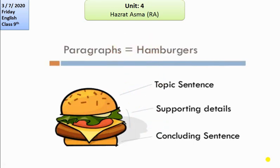Now look at this slide — this picture of a hamburger — it's going to make your concepts more clear. The upper part represents your topic sentence, where you begin with a strong sentence and tell about your main idea. All the things inside — the green, red, brown layers — are your supporting details, where you include examples, evidence, and argument. The lower part is your concluding sentence, where you sum up your main idea.